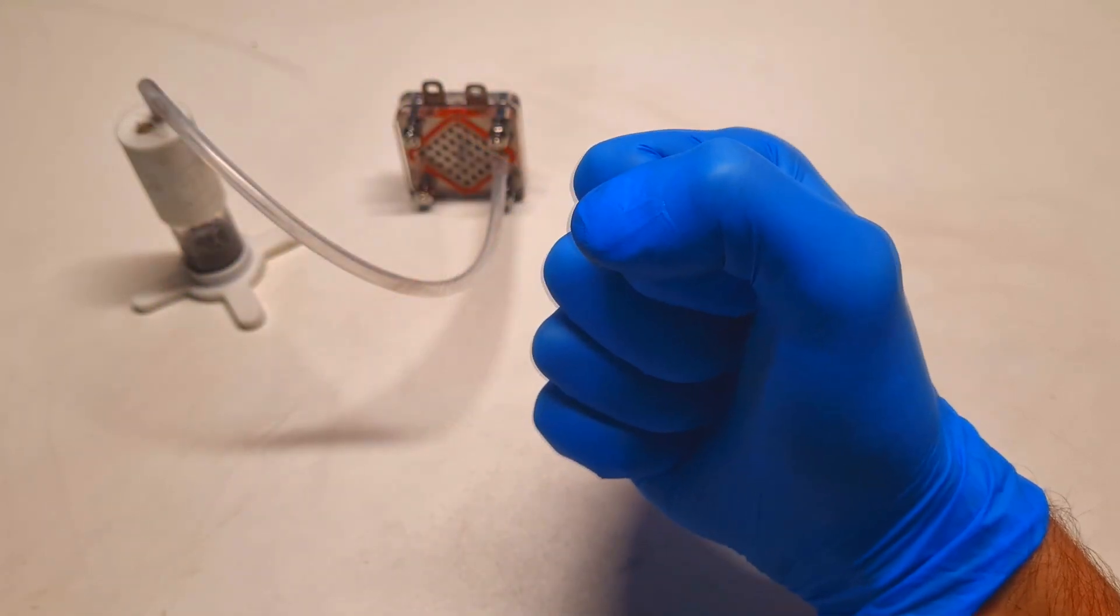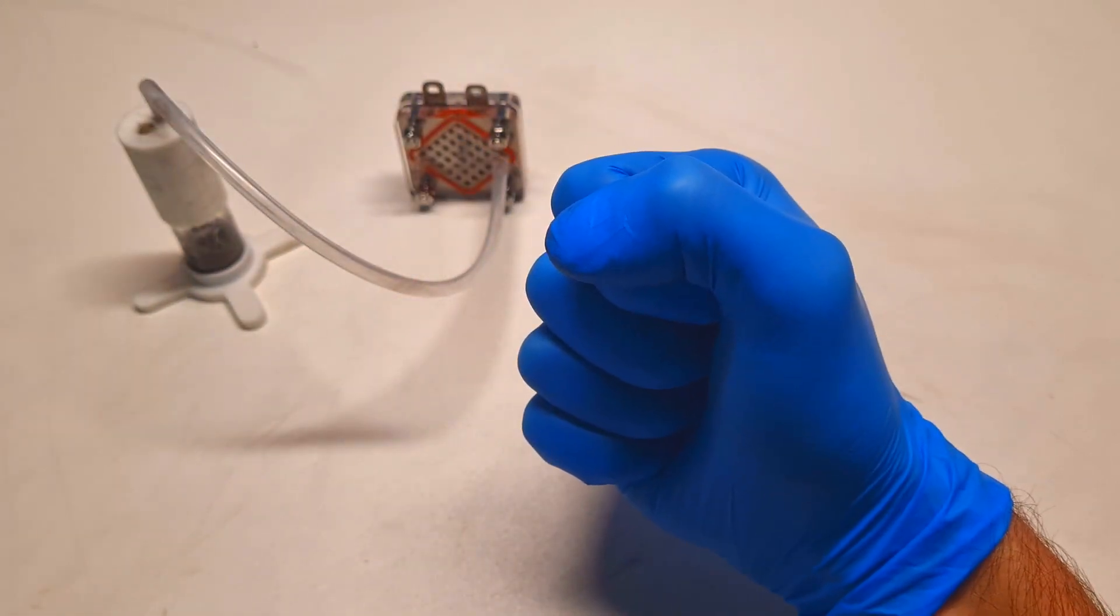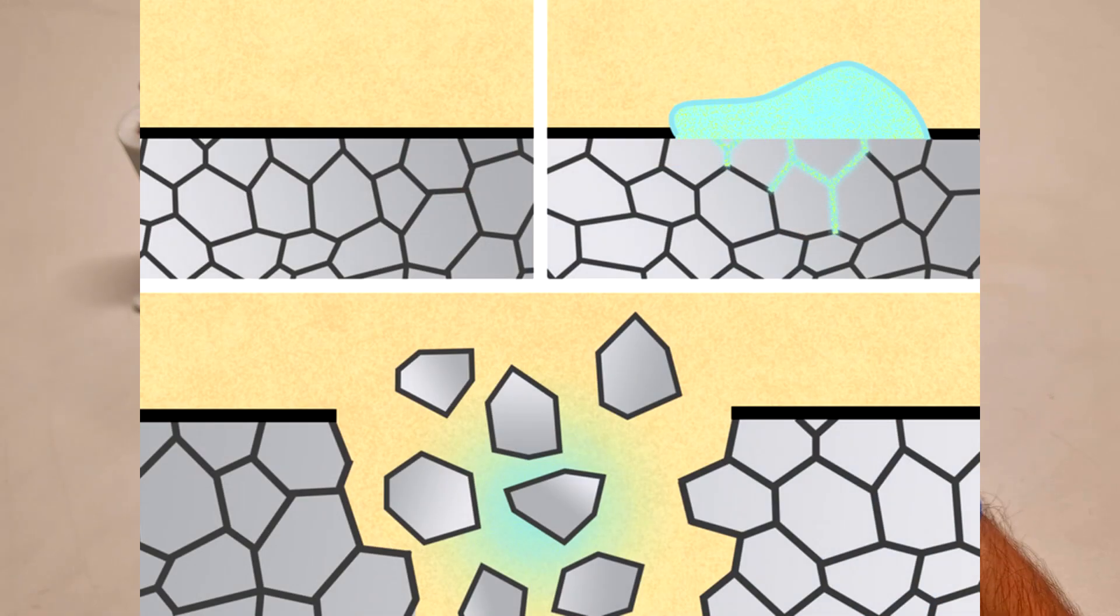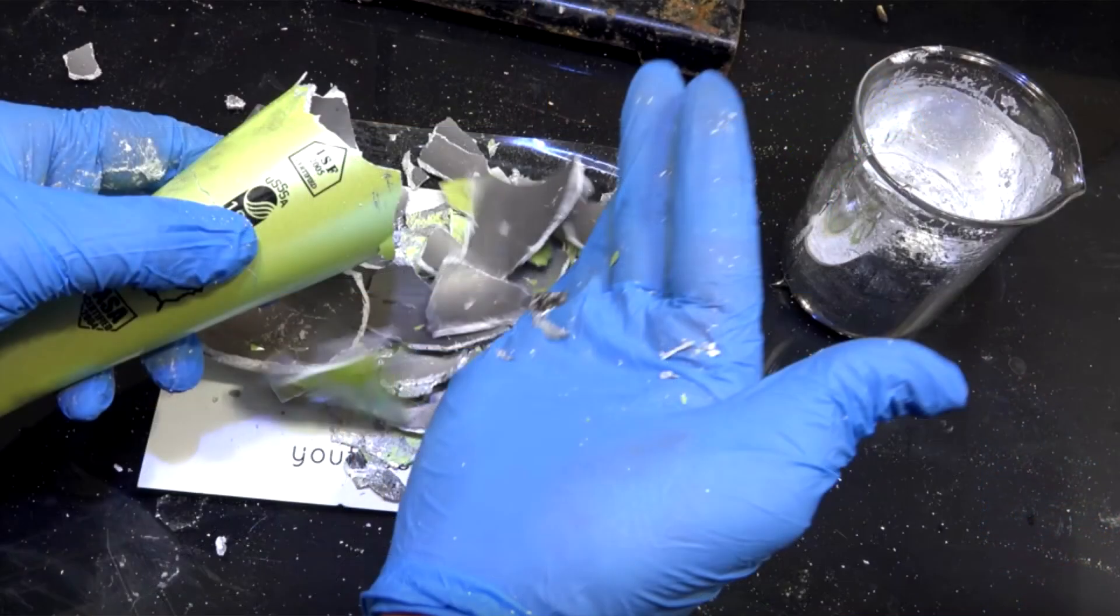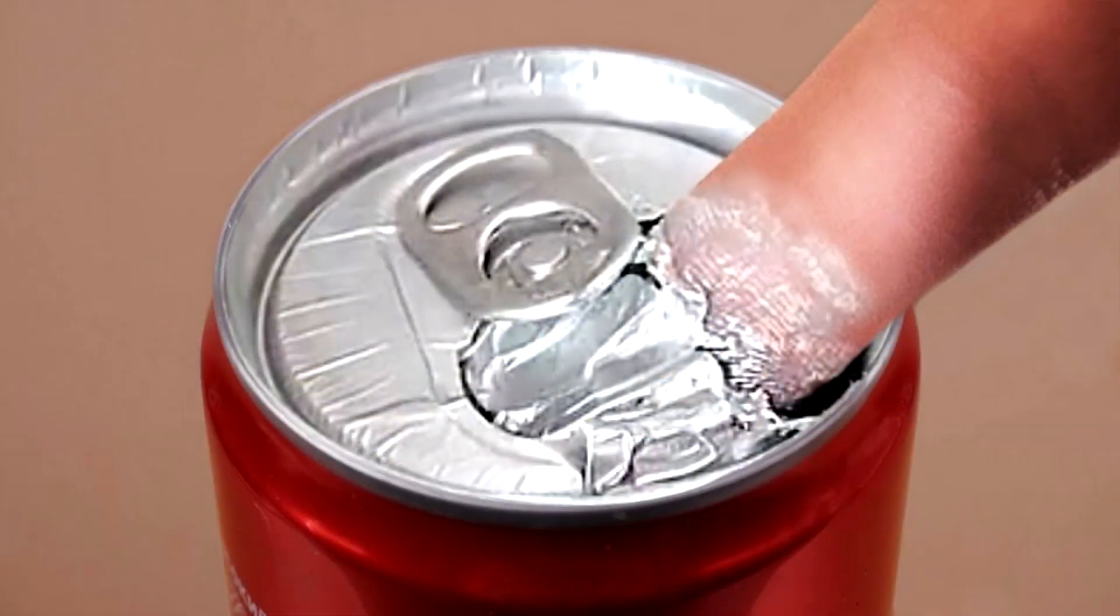If you combine the gallium with some other metal, the gallium can weaken the crystal structure of that metal. For example, if you combine the gallium with aluminum, then the gallium will weaken or damage the crystal structure of the aluminum. For this reason, the aluminum will get really weak and really brittle.